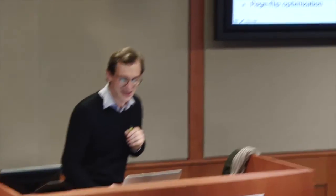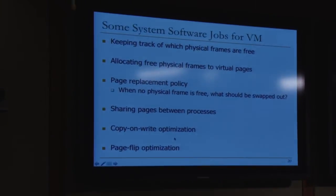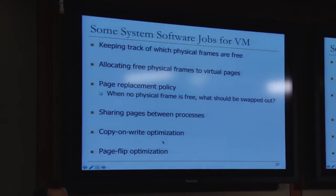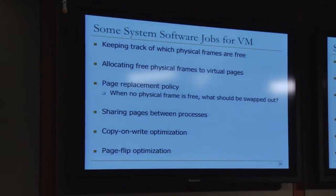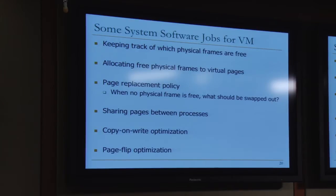Page flip optimization involves changing permissions by flipping address mappings — useful when passing data between processes. System software is responsible for these optimizations, enabled by the indirection mechanism.